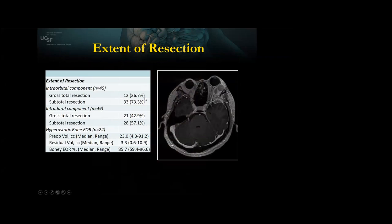Regarding bony versus soft tissue extension: the intraorbital component we were not very successful in removing, only in about 26% of patients. The intradural component was actually easier except when it involves the wall of the cavernous sinus or the region of the optic canal. But look at the hyperostotic bone removal — it's very good, 86% of the time we remove all the abnormal bone. If you just remove the soft tissue and leave the bone, you'll get a recurrence from the bone — either it will become hyperostotic again or it will be the nidus for recurrence.